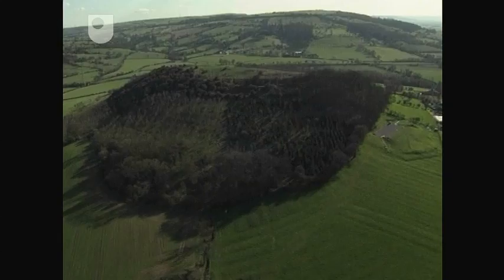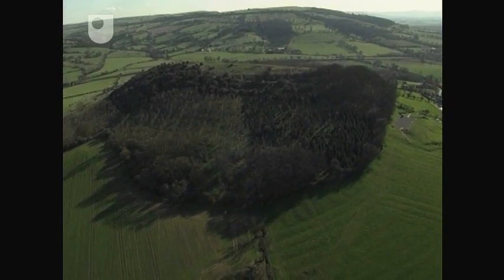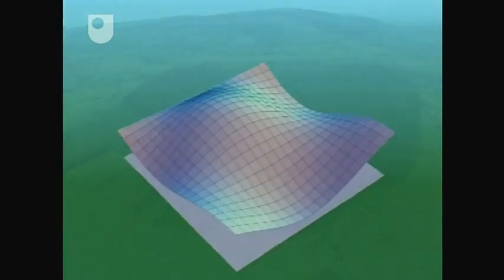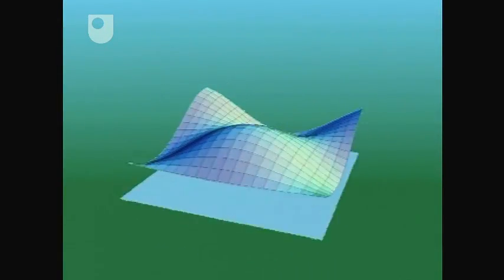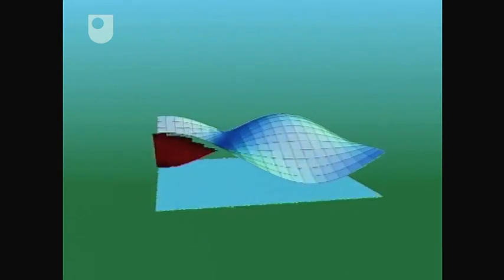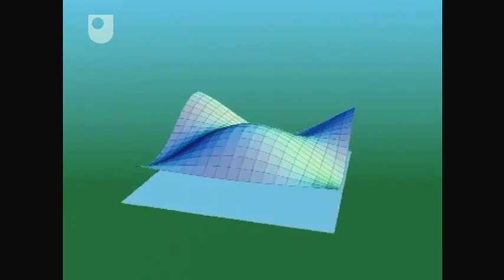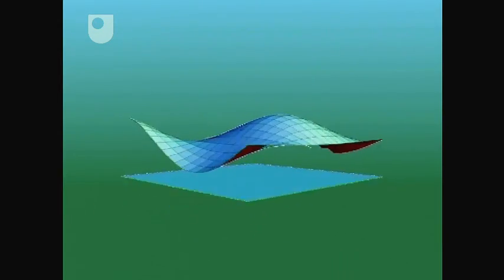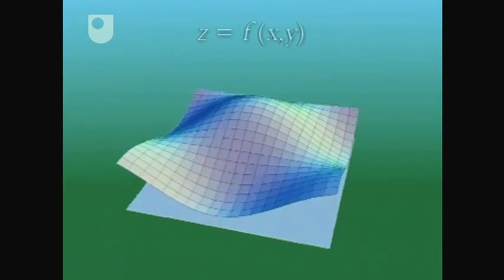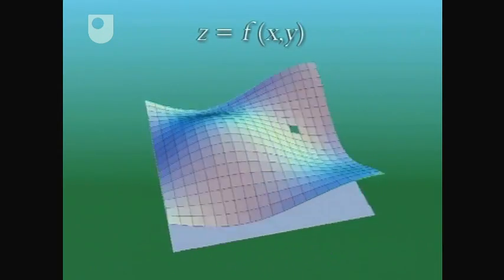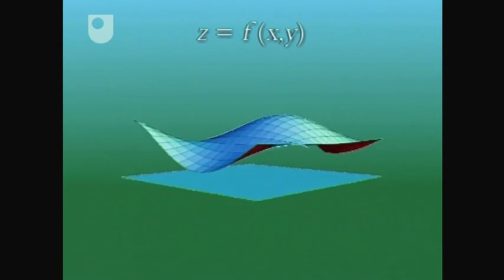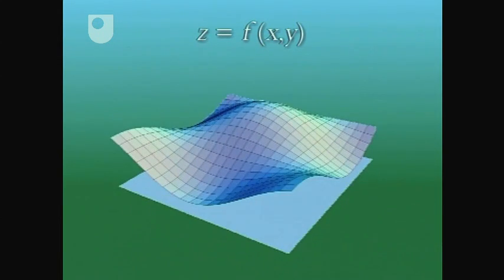We'll model the surface of the hillside as a function of two variables. The plane at the base is the xy plane. The height z of any point on the surface is a unique scalar value, f of xy. So the height z is a scalar field. Here, f of xy is equal to sin x cos y, but that's not important.